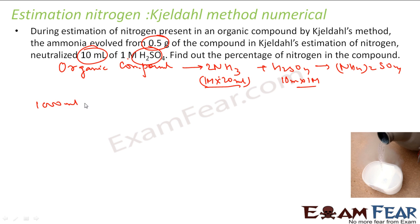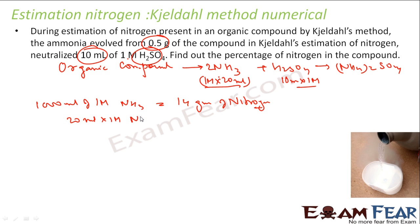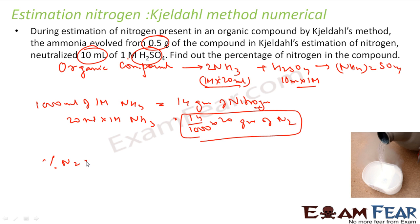I know that 1000 mL of 1M ammonia contains 14 grams of nitrogen. So 20 mL of 1M ammonia will give (14/1000) × 20 = 0.28 grams of nitrogen. The percentage of nitrogen = (0.28 / 0.5) × 100 = 56%. That is my answer.